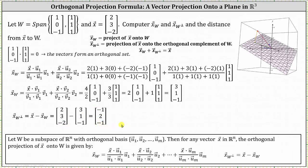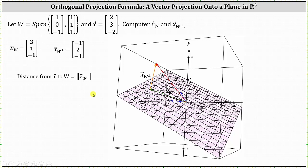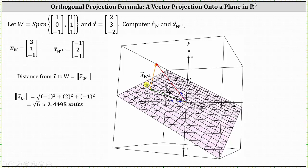The final step to find the distance from vector x to W is to find the magnitude of the projection of vector x onto the orthogonal complement of W. The magnitude equals the square root of (-1)² + 2² + (-1)², which equals the square root of 6, approximately 2.4495 units. So the distance from the red vector to W, which is the magnitude of the orange vector, is approximately 2.4495 units.